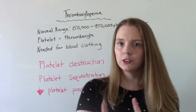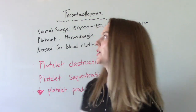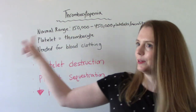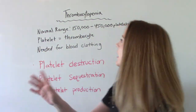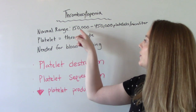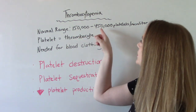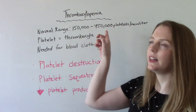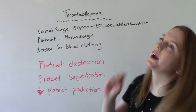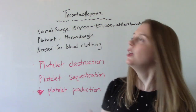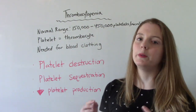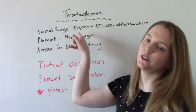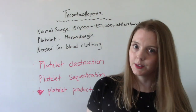Just as a little bit of a review, the normal healthy platelet count in an adult is 150,000 to 450,000 platelets per microliter. So thrombocytopenia would be less than 150,000.